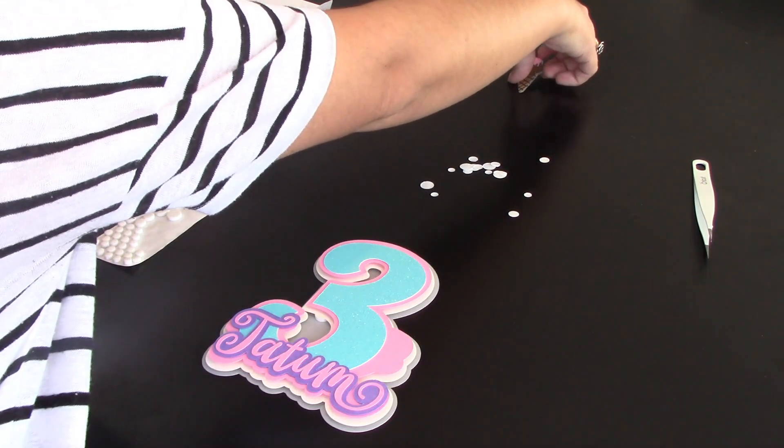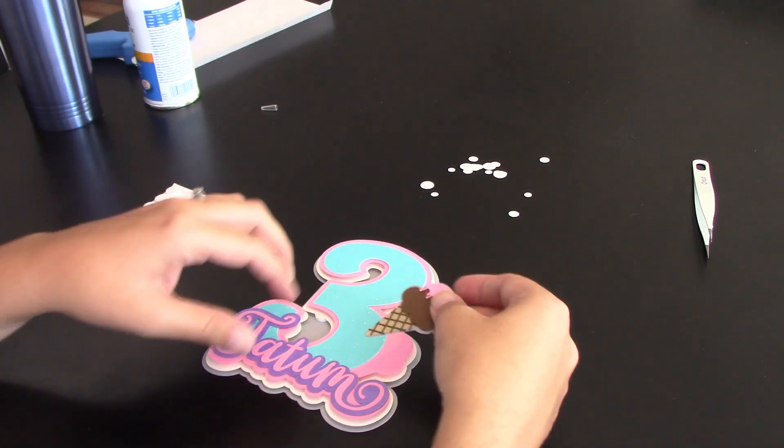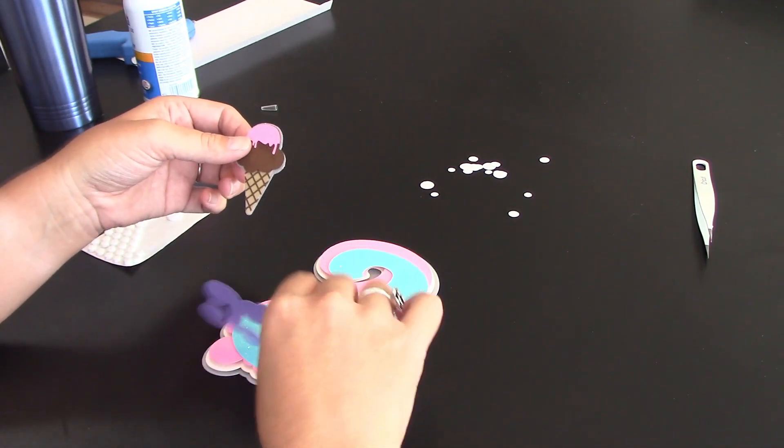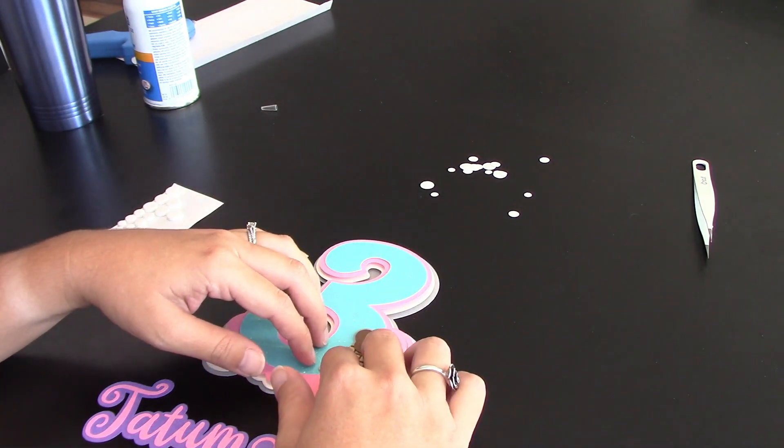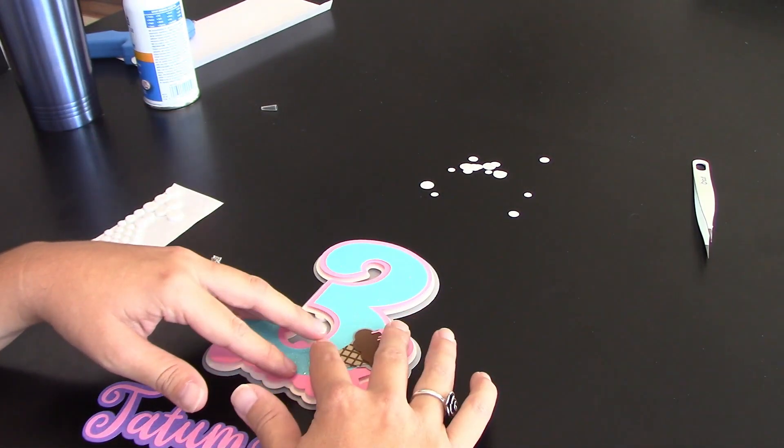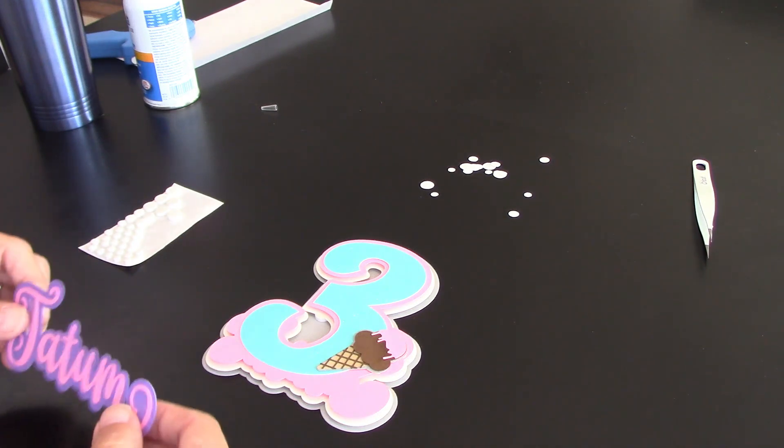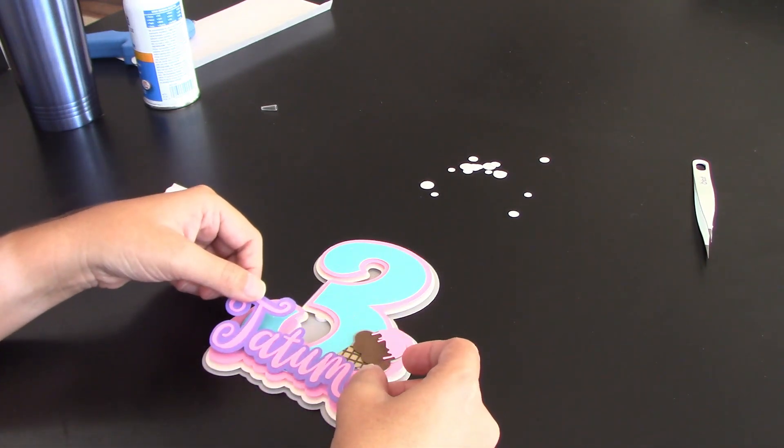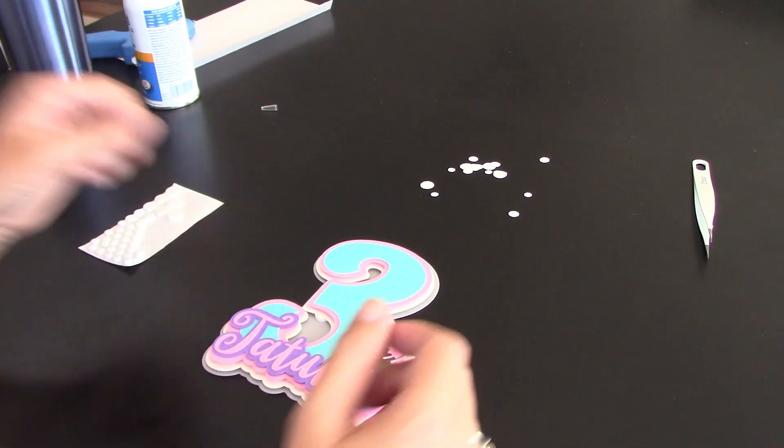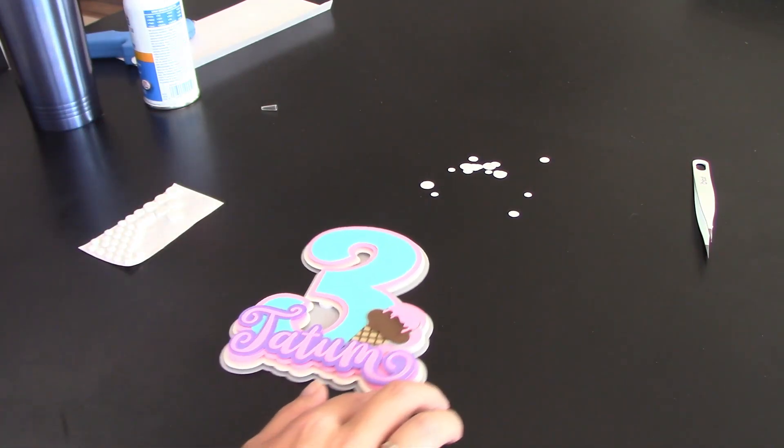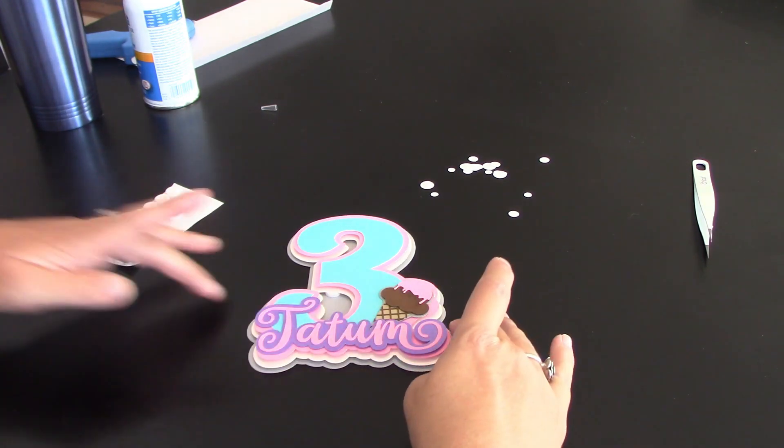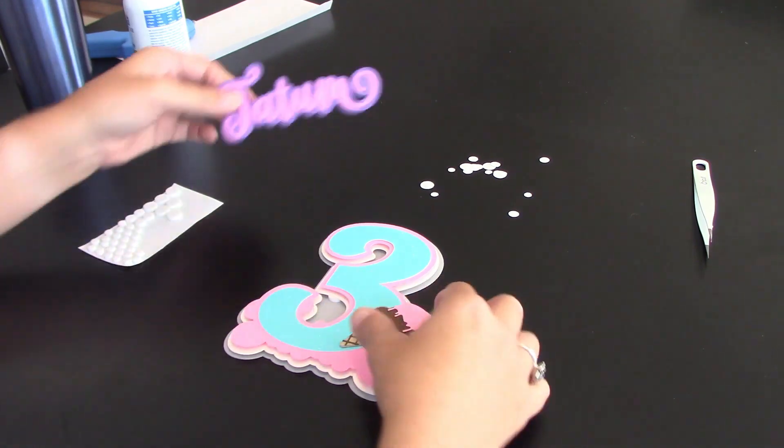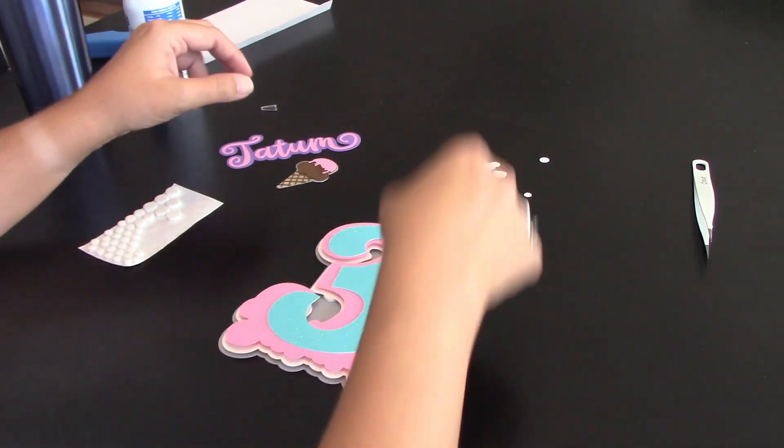Then we're going to put our Tatum on top of it. Sorry, the fly's wanting to photobomb the video here. Let's see. I'm just getting an idea of where I want to be placing these things. And my dogs decided they want to play. So I think that's where we're going to be going with it. So yeah, I need to glue down the three next and then the ice cream and then the Tatum. And I don't mean glue. I mean dot, dot them down.